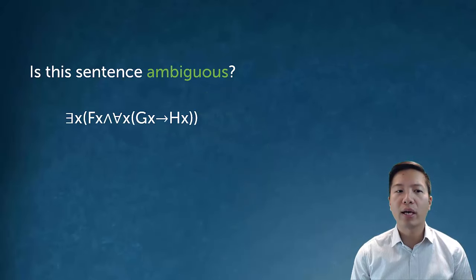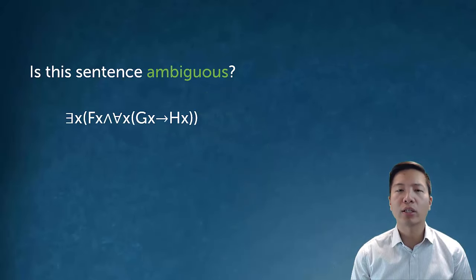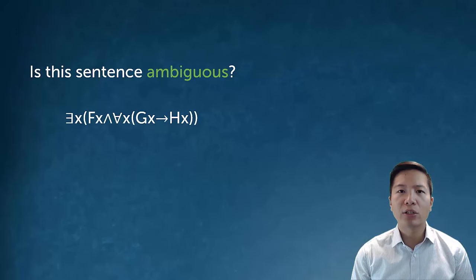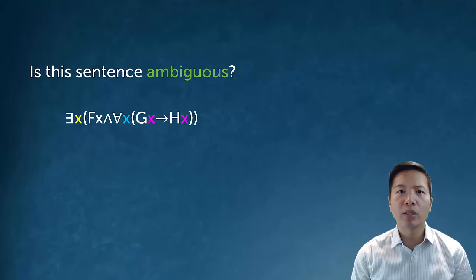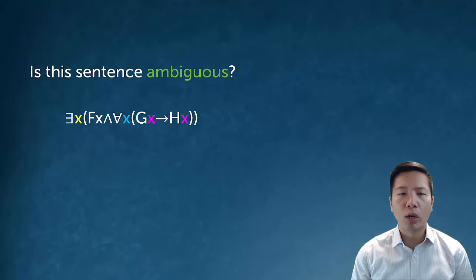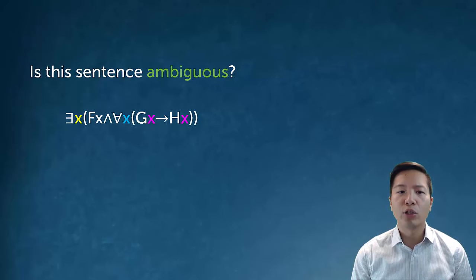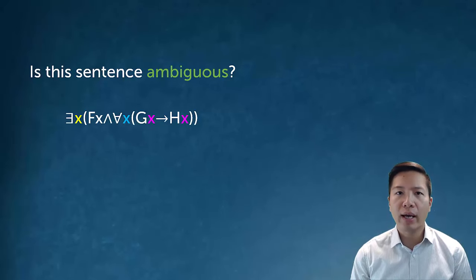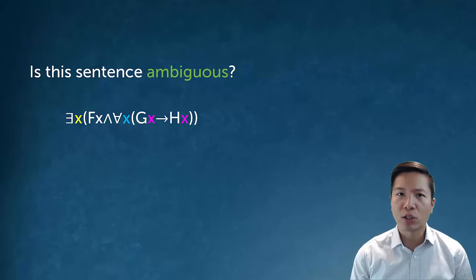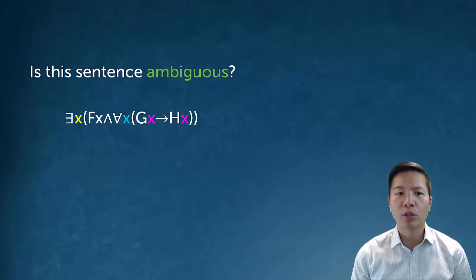Let's take a look at this sentence: There exists an x, fx, and for all x, gx arrow hx. Is it ambiguous? In the past, I actually sort of suggested that it is ambiguous, and the reason why is because I use the same variable letter within the scope. So here, for g and h, the question is that x there—is that part of the existential x, or is that part of the universal x? And it seems unclear.